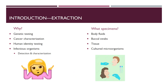You may be wondering why one would need to extract DNA or RNA and what we can use it for. DNA and RNA can actually be used in many different ways, such as for genetic testing, cancer characterization, to identify humans in forensic cases, and to detect infectious organisms, just to name a few. We can extract nucleic acids from many different specimens including body fluids, buccal swabs, tissues, and even cultured microorganisms, which makes molecular diagnostic testing very versatile.